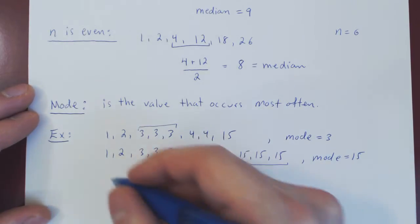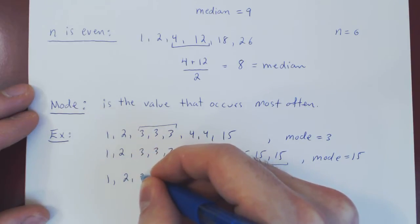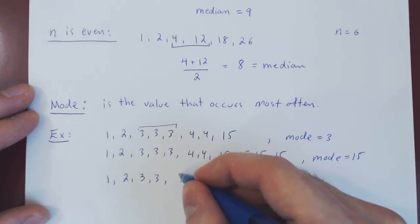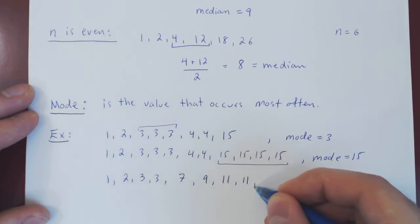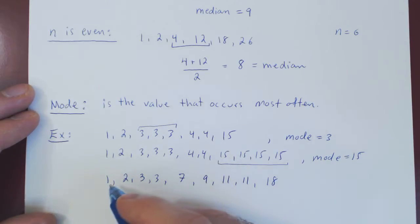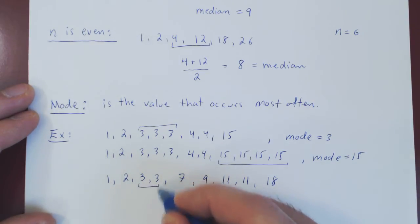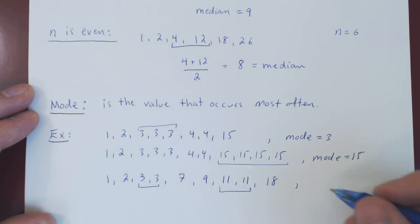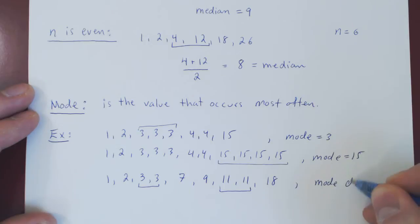But what if you had, say, this example now: 1, 2, 3, 3, 7, 9, 11, 11, 18. Every value occurs once, except for 3 which occurs twice, and 11 which also occurs twice. So here, it's a tie between 3 and 11. In a case like this, the mode does not exist. So there can only be a mode if there is a value that occurs strictly more often than any other values. If there's a tie, there is no mode.